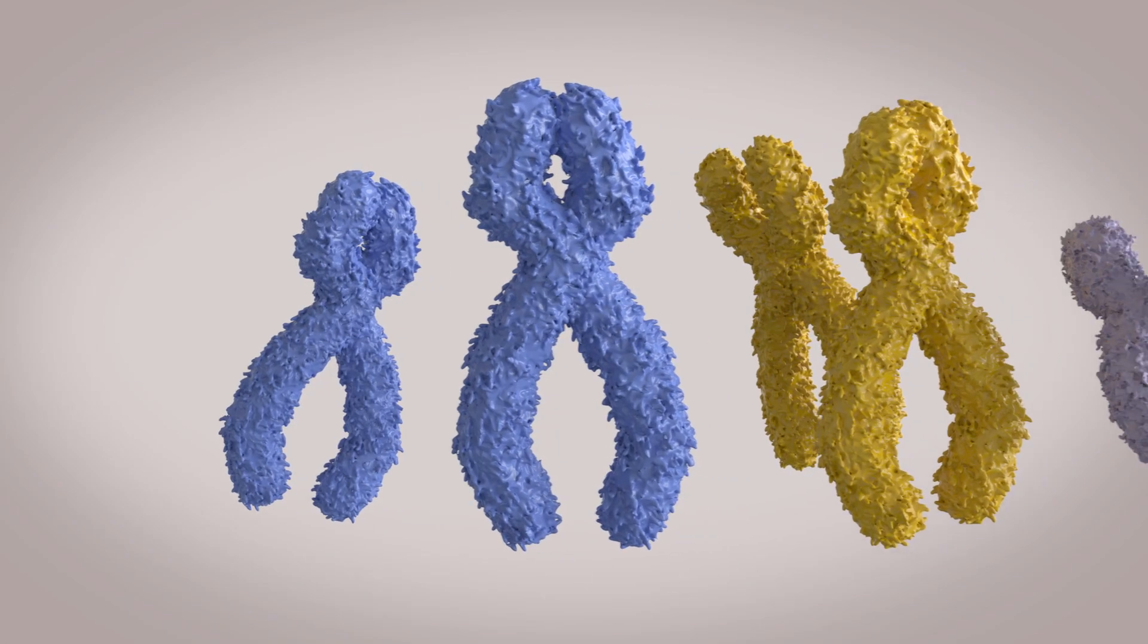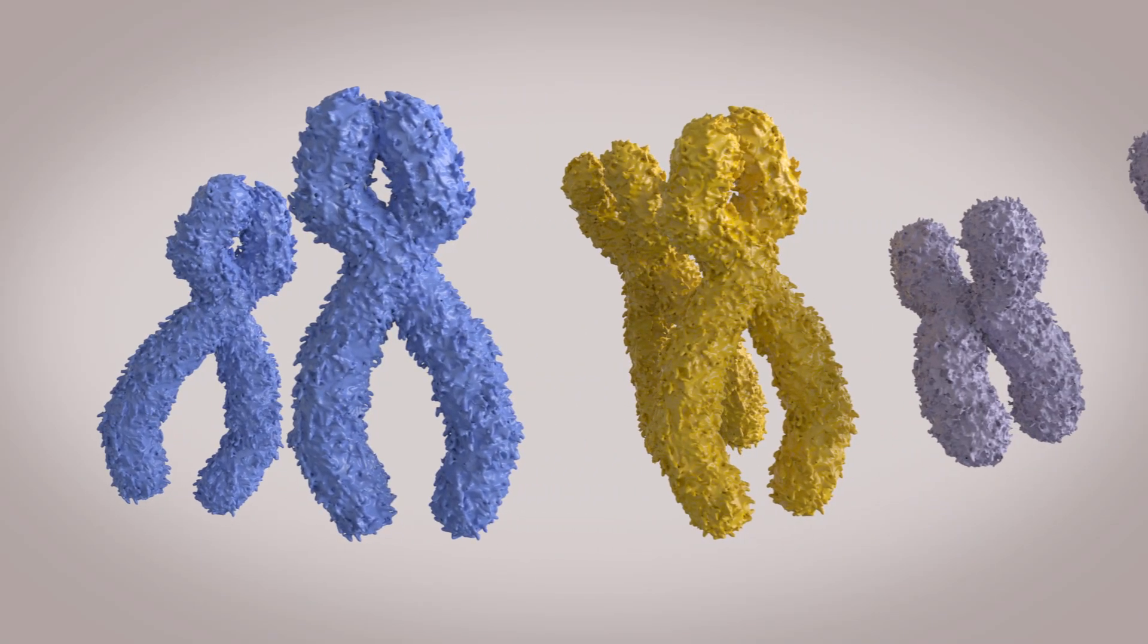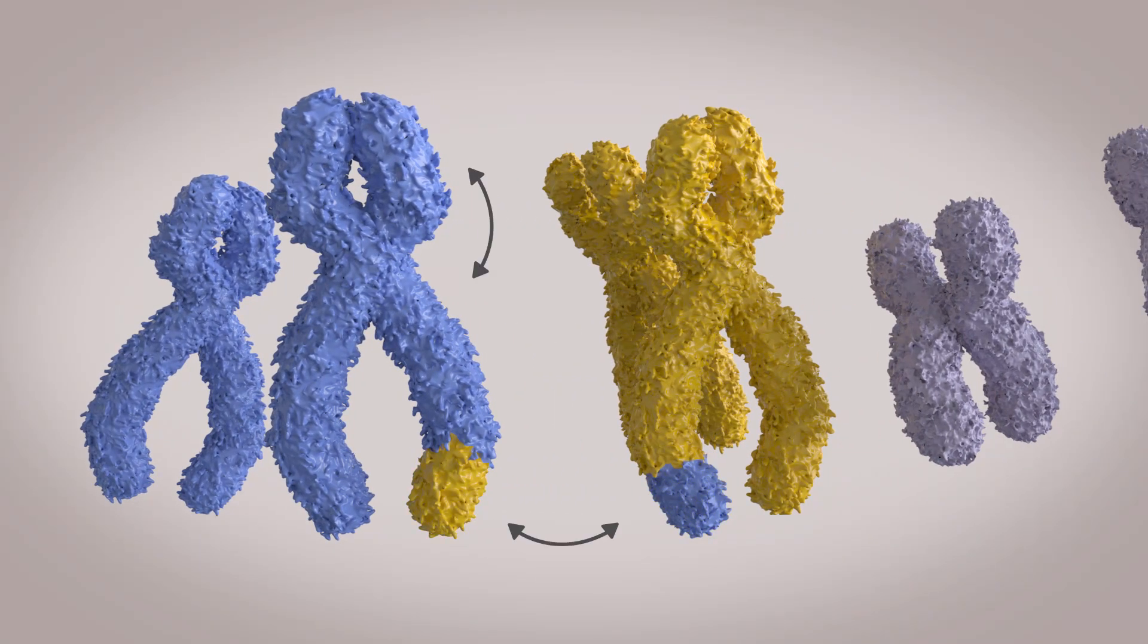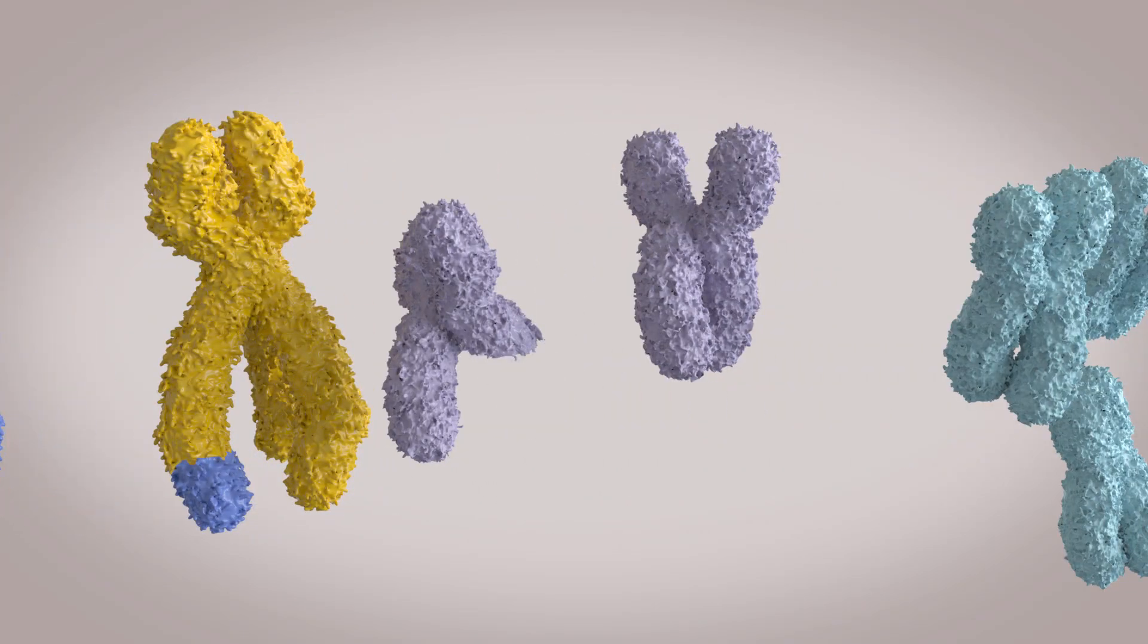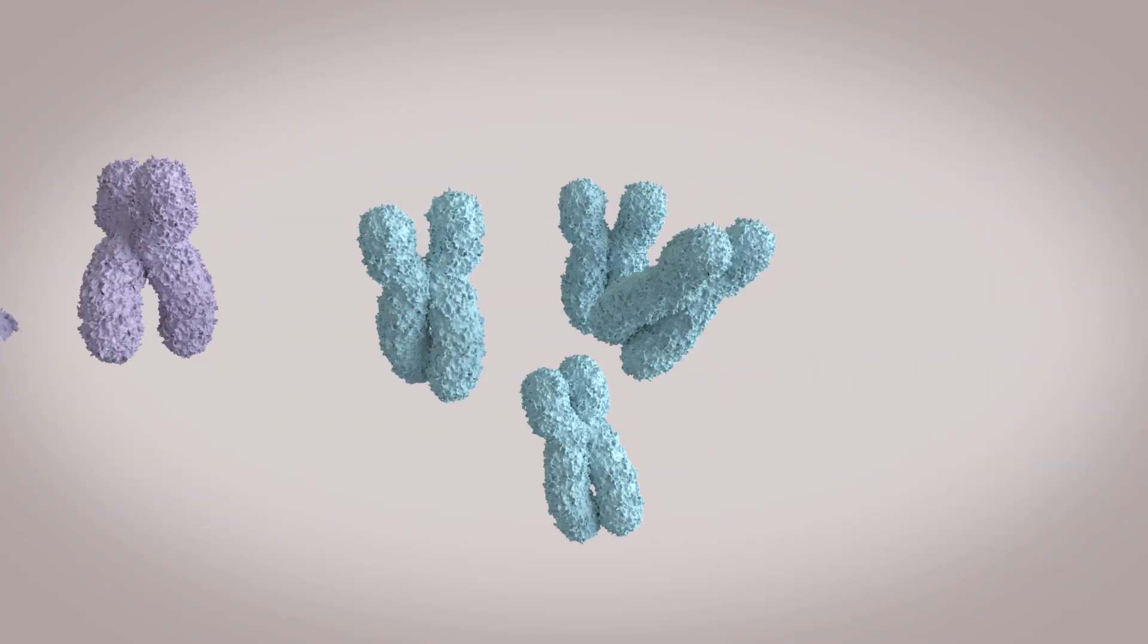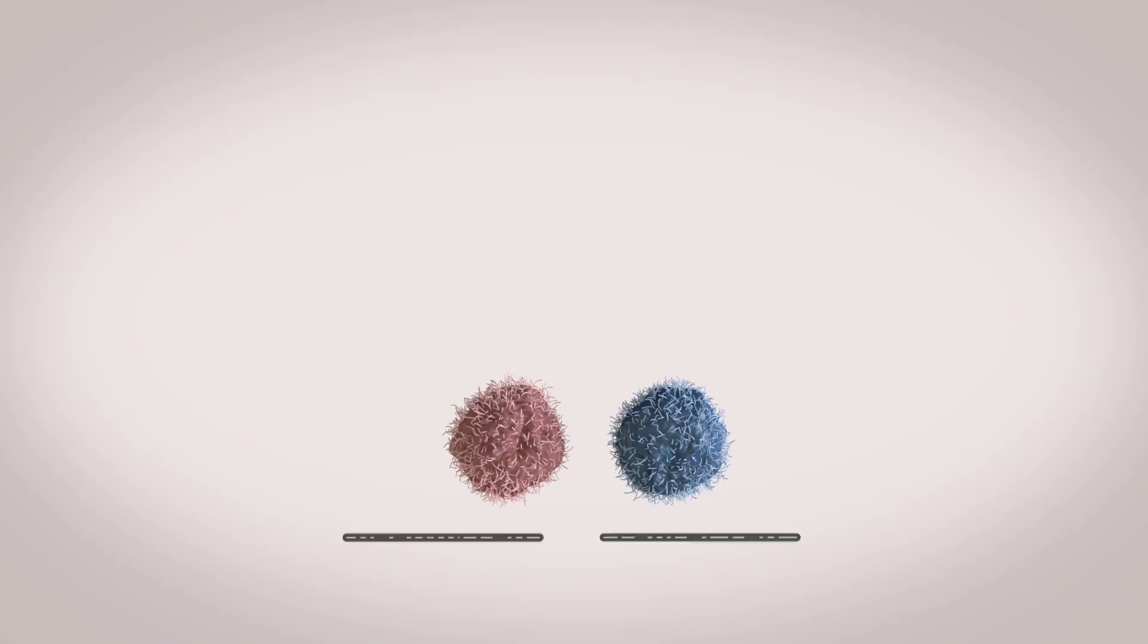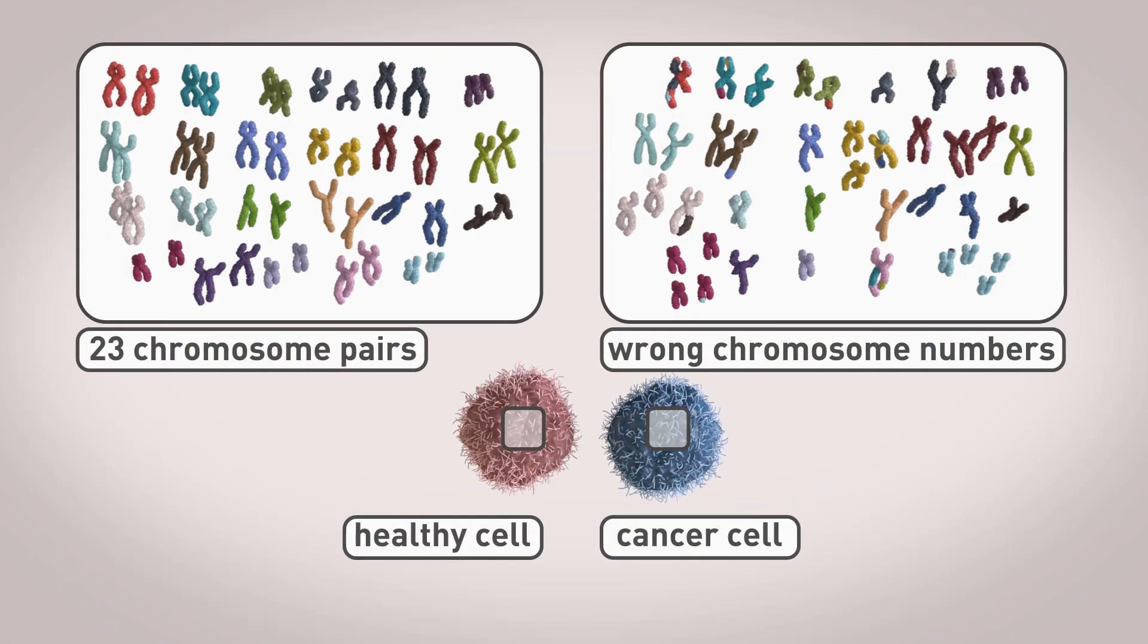But cells can make mistakes, for example, accidentally swapping bits of DNA around within or between chromosomes. They might lose parts of chromosomes, make too many copies, or carry across the wrong number of chromosomes into the new cells.